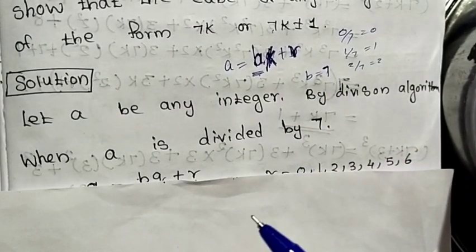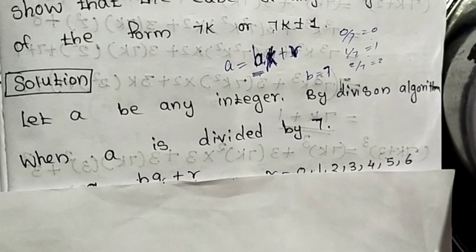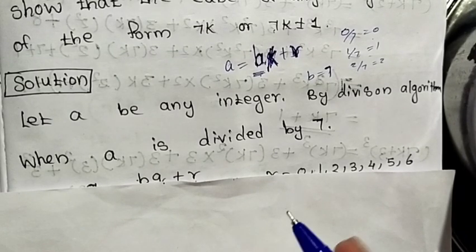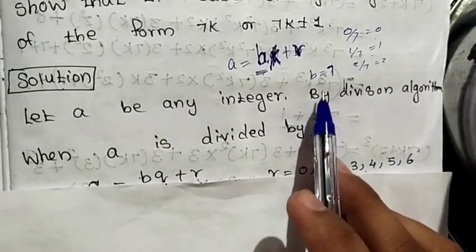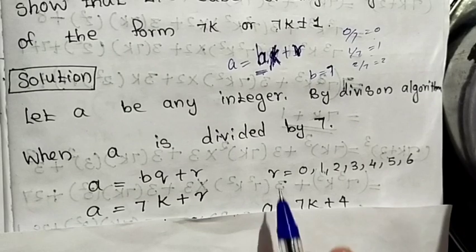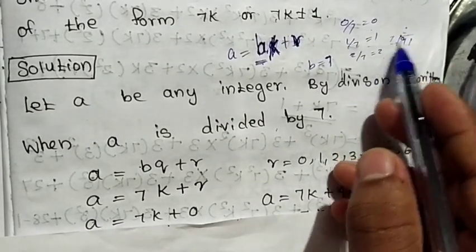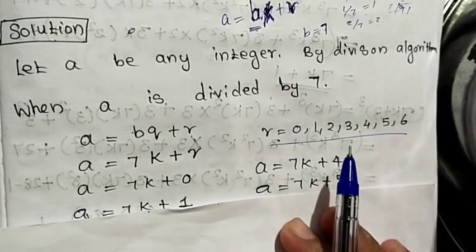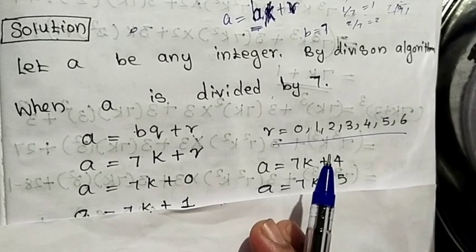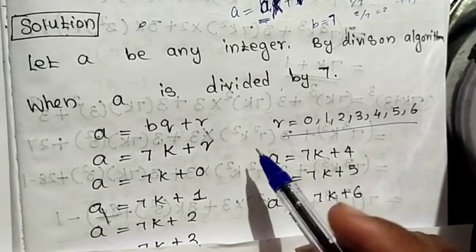The remainders go from 0 up to 6. So r can be 0, 1, 2, 3, 4, 5, or 6. Now we go back to the division algorithm: a equals bq plus r, where b is 7. So a equals 7q plus r, giving us the cases a equals 7k, 7k+1, 7k+2, 7k+3, 7k+4, 7k+5, or 7k+6. For the case a equals 7k, we have a cubed equals 7k cubed.